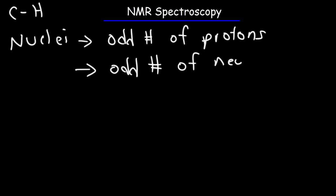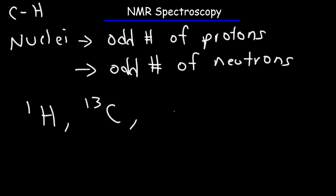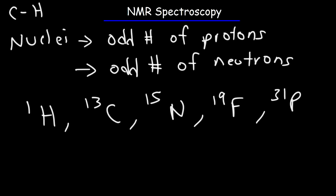Let me give you some examples. Nuclei such as hydrogen, carbon-13, nitrogen-15, fluorine-19, and phosphorus-31 — these nuclei either have an odd number of protons or an odd number of neutrons. As you can see, the mass numbers are all odd.